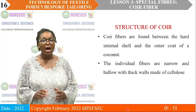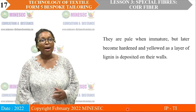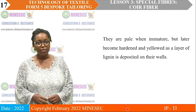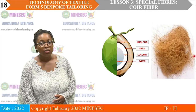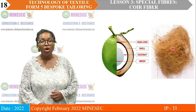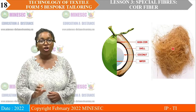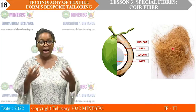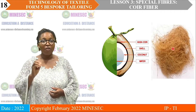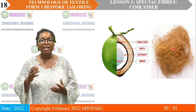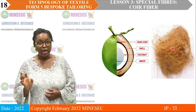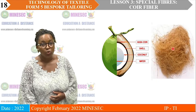The individual fibers are narrow and hollow with thick walls made of cellulose. They are pale when immature but later become hardened and yellow as a layer of lignin is deposited on their walls. Cellulose is the chemical found most in vegetable fibers. When immature, the fiber is pale — that is, white — but when it becomes ripe, it becomes brownish, because of the deposit of lignin. Lignin is a chemical found mostly in bast fibers, which are also vegetable fibers.